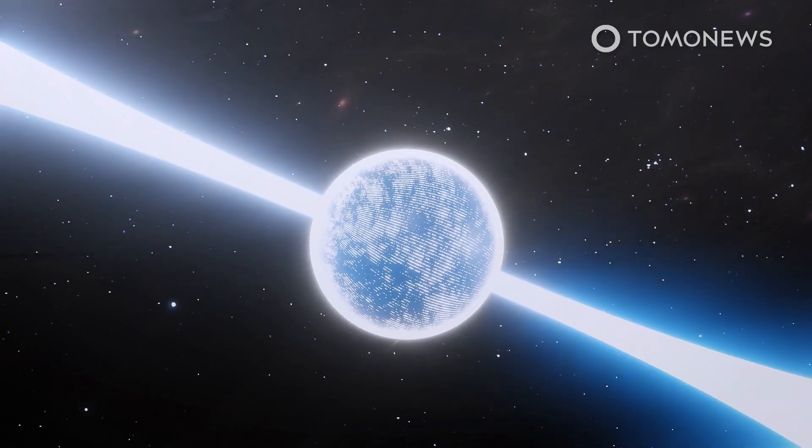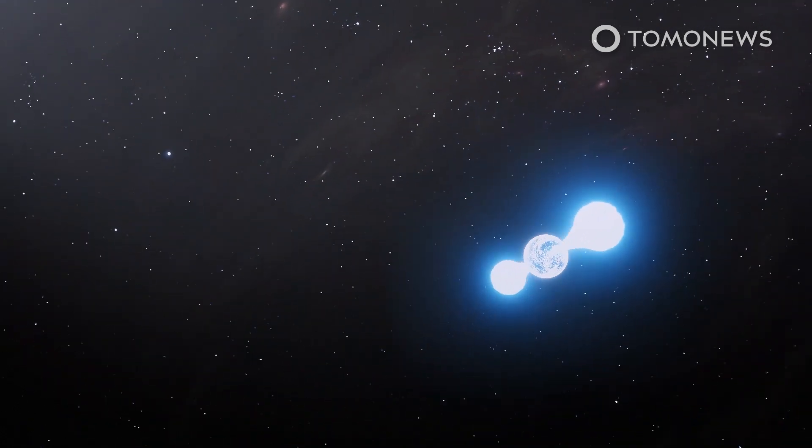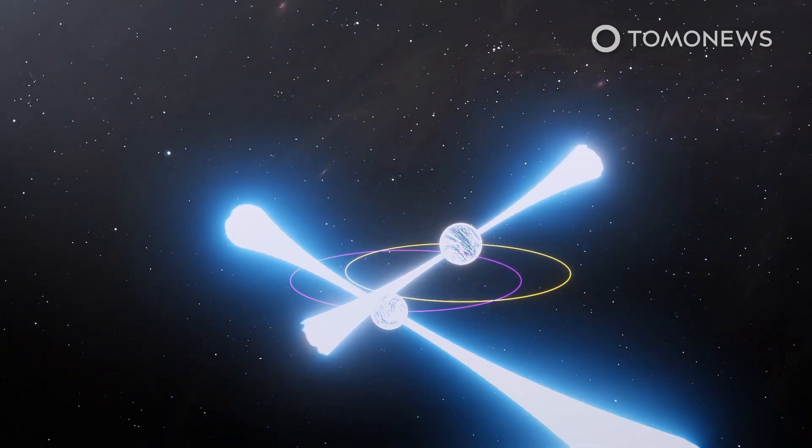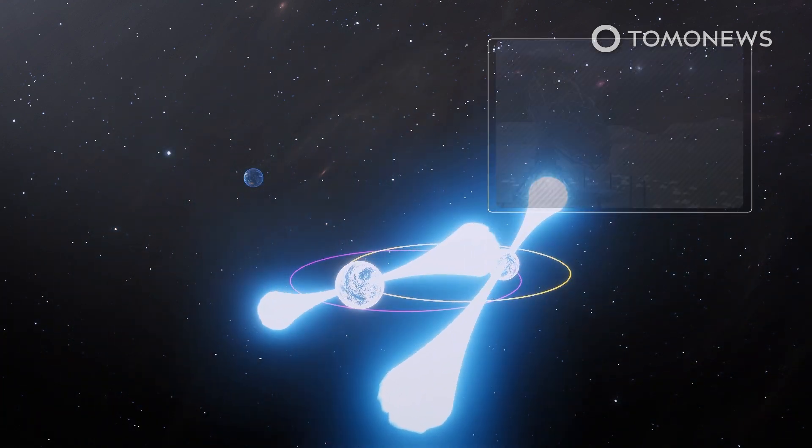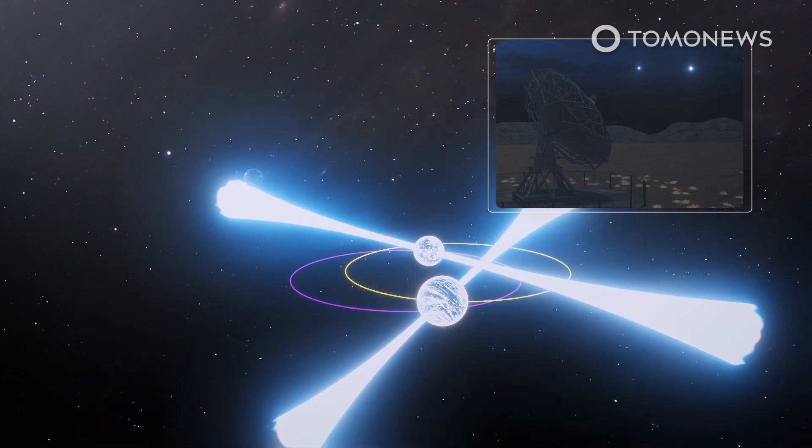Researchers writing in the journal Physical Review X observed a double-pulsar system for 16 years, using large telescopes to note changes in the timing of flashes they produce that are visible from Earth, according to the conversation.